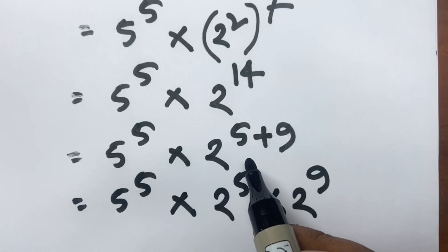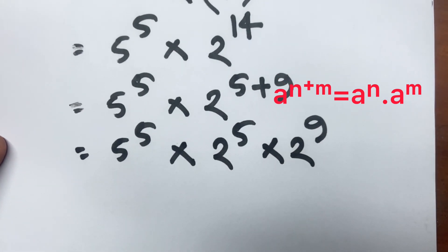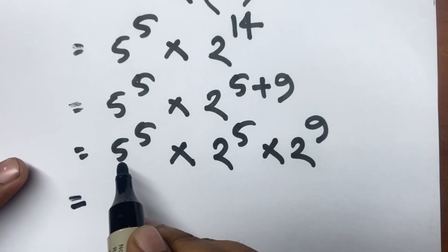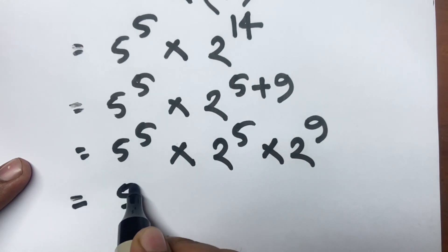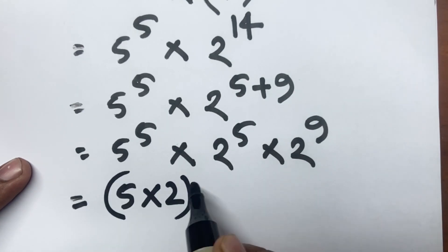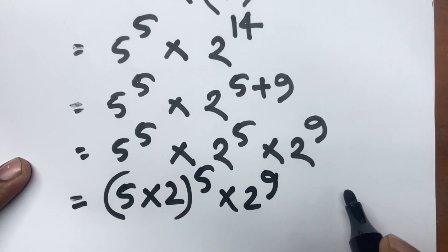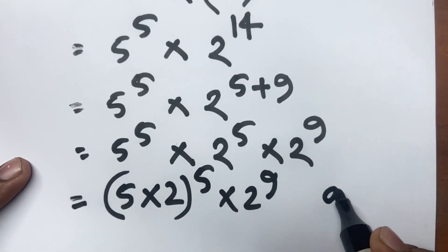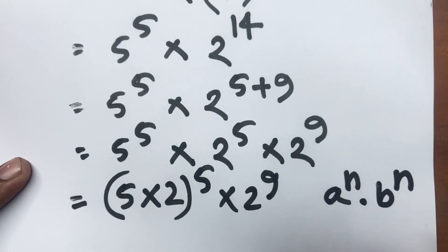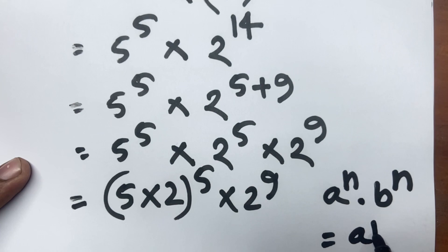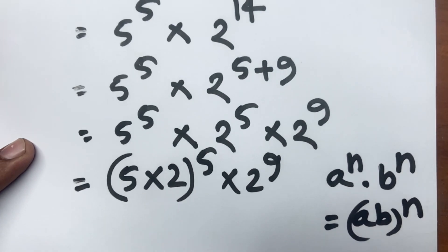I follow the exponential rule: since the exponents are the same, I can apply the formula a to the power n times b to the power n equals (ab) to the power n. Using this formula, 5 to the power 5 times 2 to the power 5 becomes 10 to the power 5.